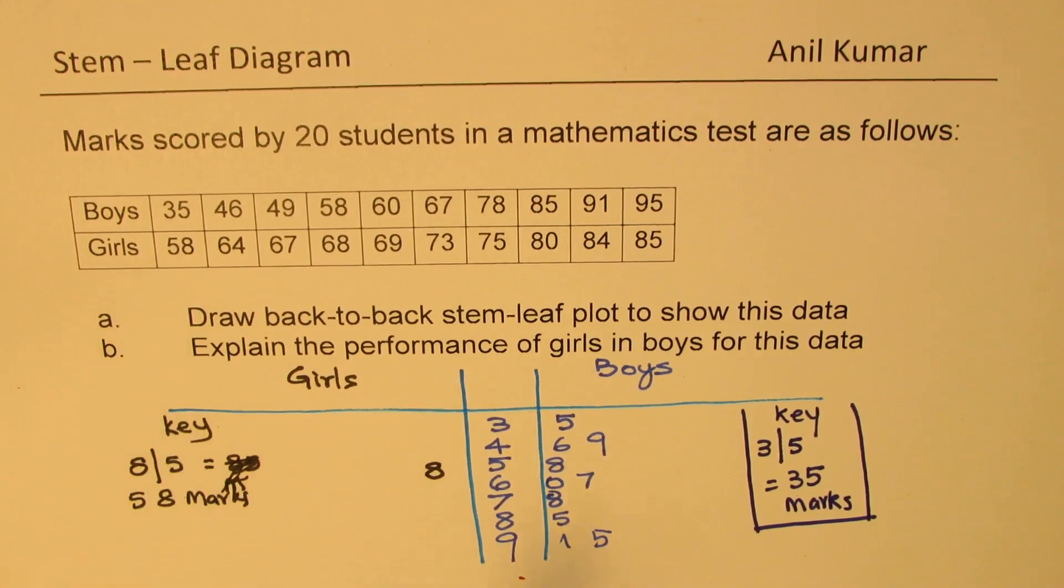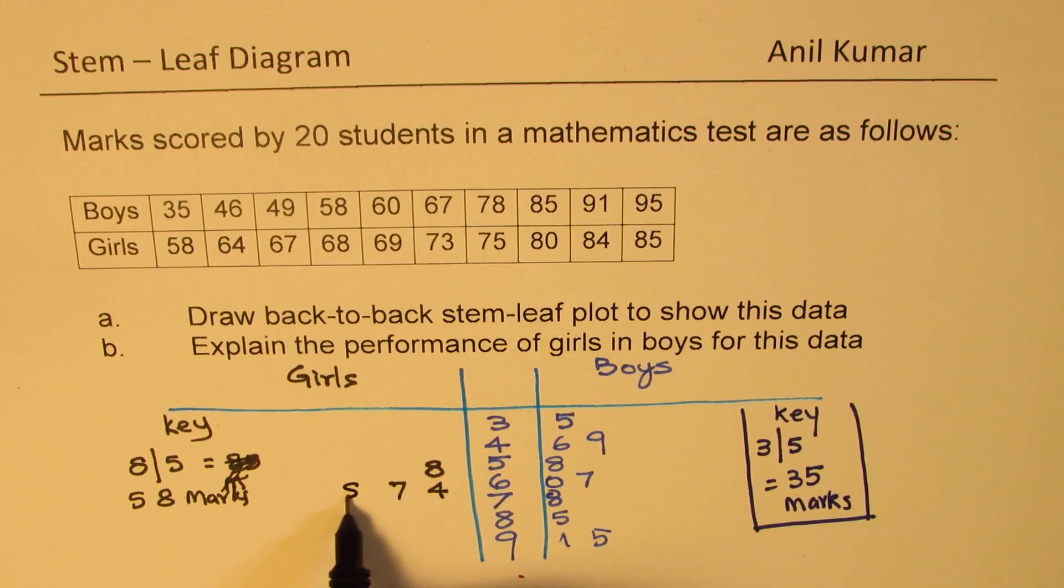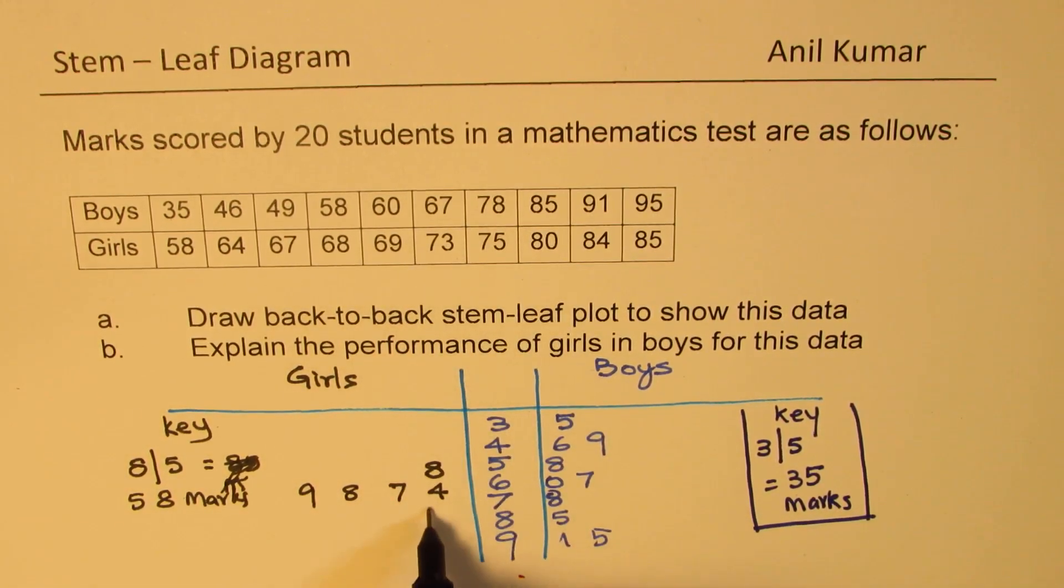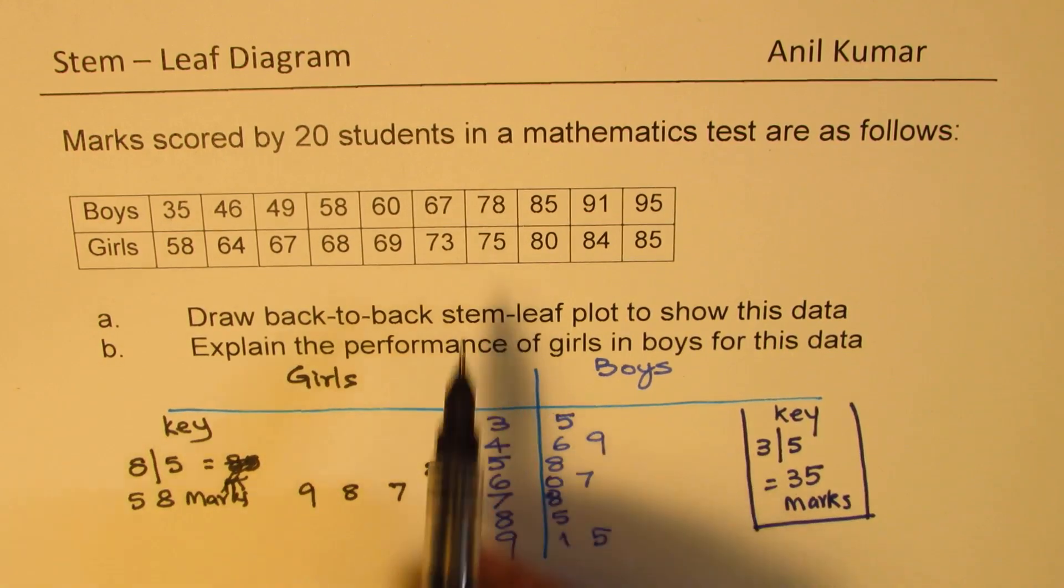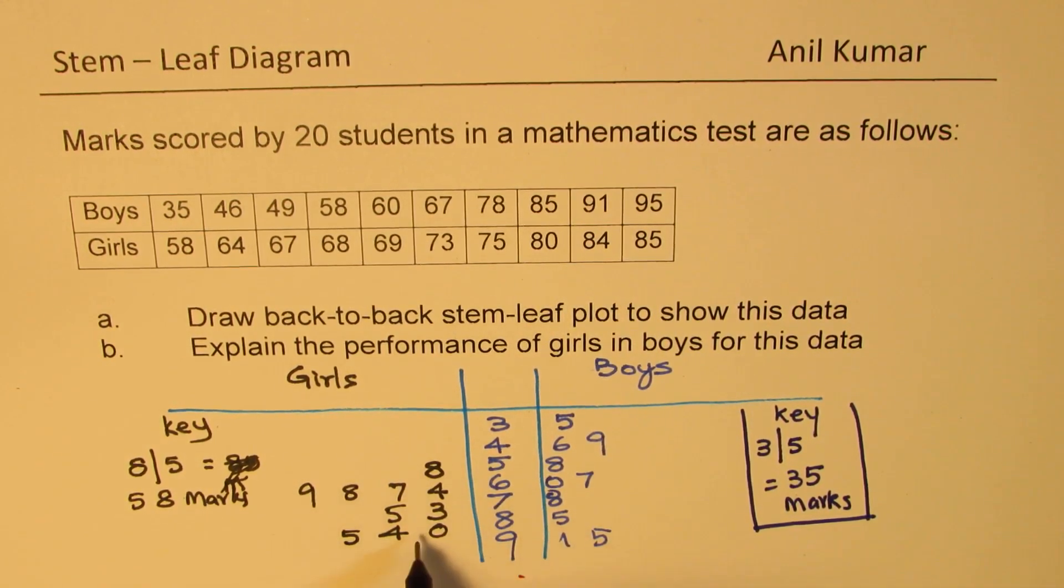So 58 has been placed like this. 64, 6 and 4, 64. 67, 7 comes there. 68, 8. 69, 9. 73, 7 and 3. 75, 7 and 5. 80, 8, 0. 84, and 85. So that becomes the data for girls. Do you see that?